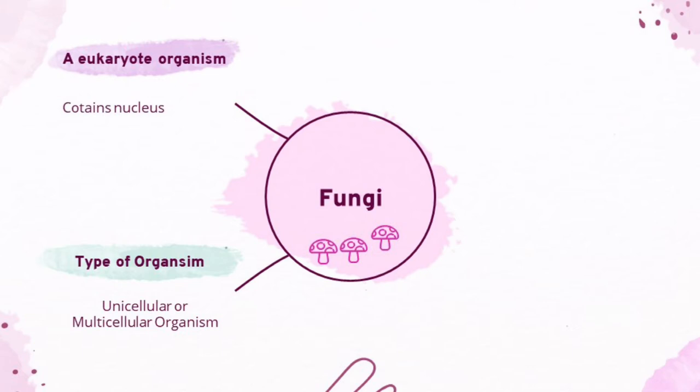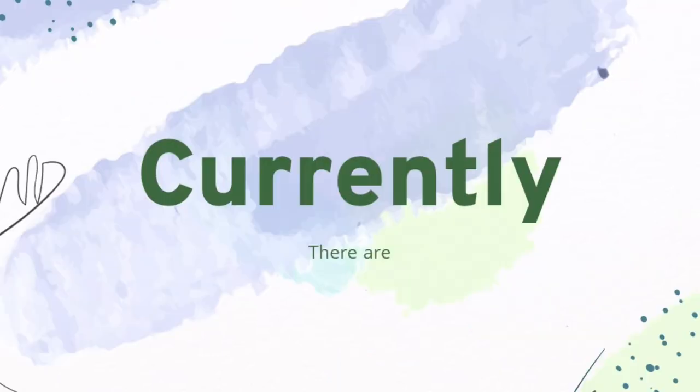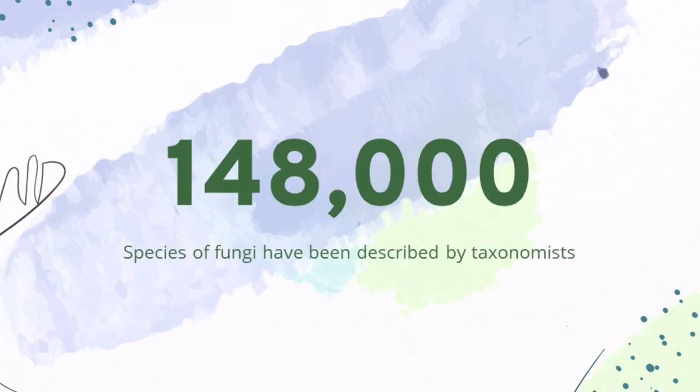Fungi is a eukaryote organism that contains nucleus. It is unicellular or multicellular organism. It is heterotrophs, saprophyte or parasite. Its cell wall is made out of chitin and its body is made out of mycelium. Currently, there are 148,000 species of fungi have been described by taxonomists.